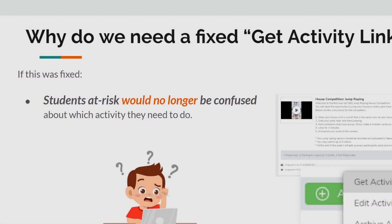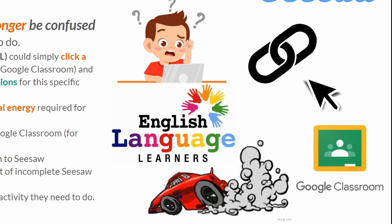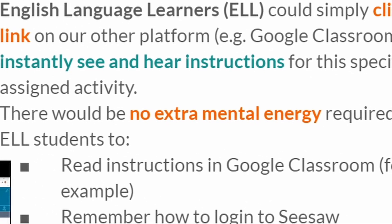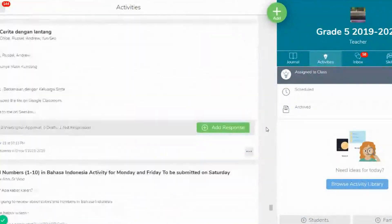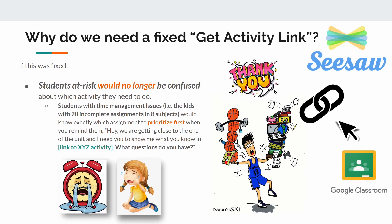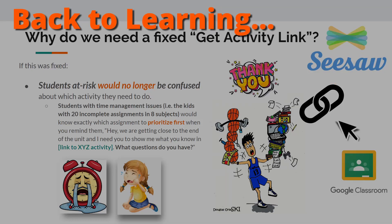So why do we need to fix the Get Activity link? Well, if this was fixed, students at risk would no longer be confused about which activity they need to do. For example, English language learners could simply click a link on our other platform, like Google Classroom, and instantly see and hear instructions for the assigned activity in Seesaw. There would be no extra mental energy required for ELL students to read instructions in Google Classroom, remember how to log into Seesaw, scroll through a long list of incomplete activities, and finally find the related activity. Furthermore, students with time management issues — those kids with 20 incomplete assignments in eight subjects — would know exactly which assignment to prioritize. The focus can come back to learning instead of technical workarounds.